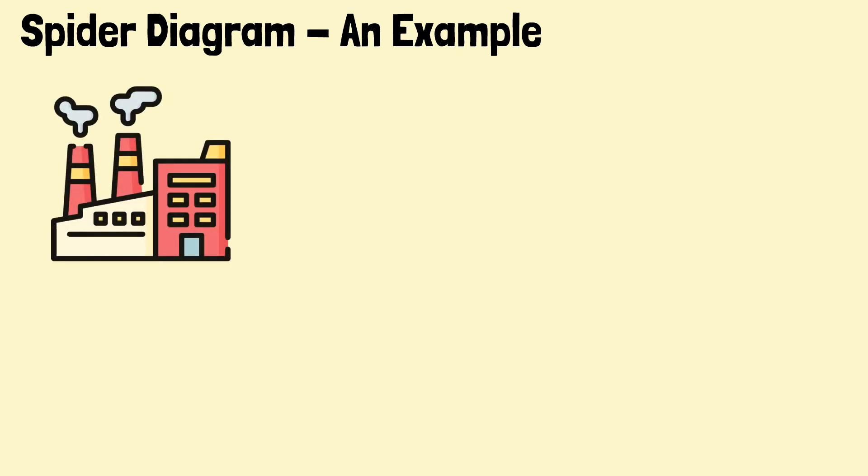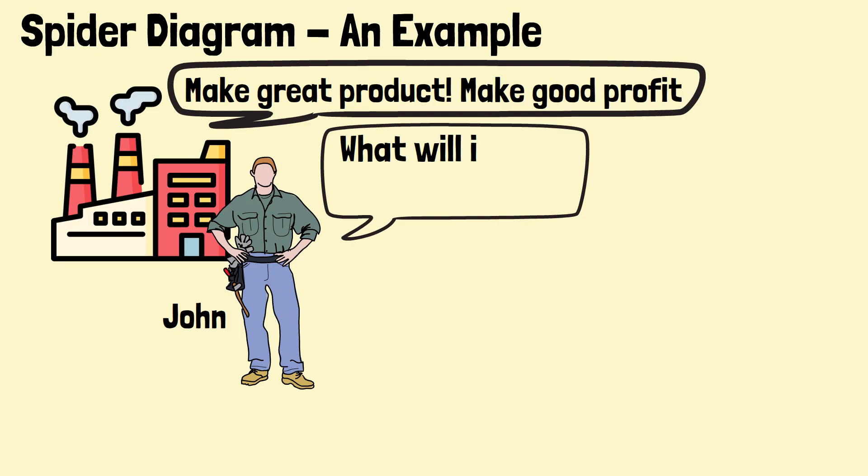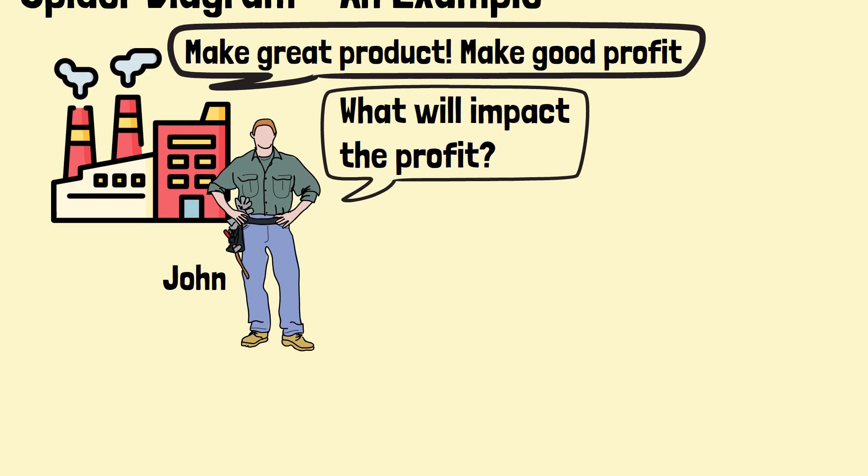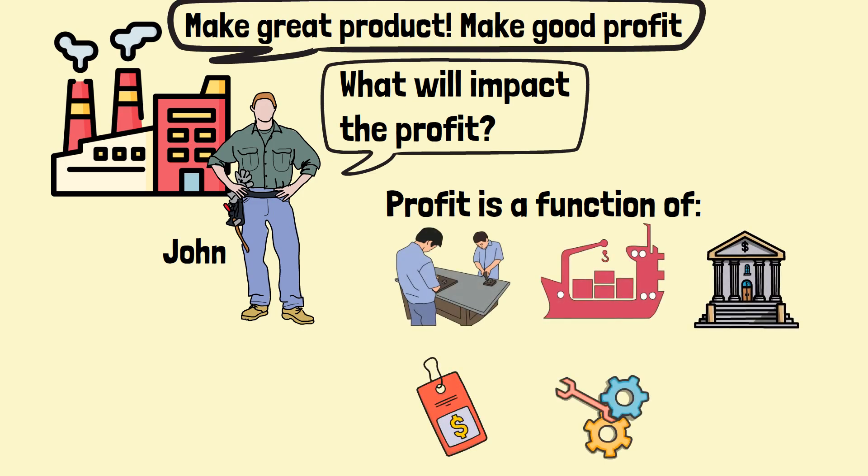Let's use an example to illustrate the development of a SPIDER diagram. Suppose John is operating a manufacturing plant, and his goal is to produce quality products while earning a good profit. John has identified a few variables that can impact his profit, including labor cost, material cost, bank rate, selling price, and productivity.